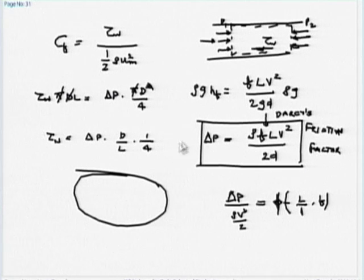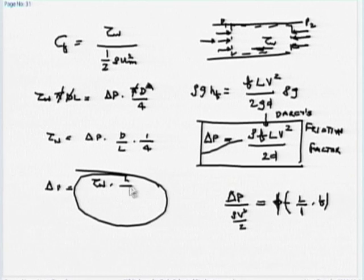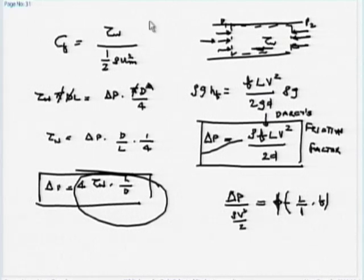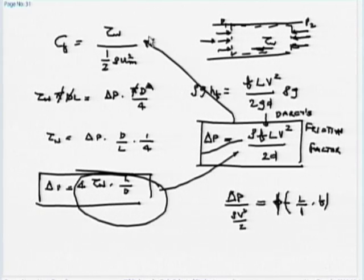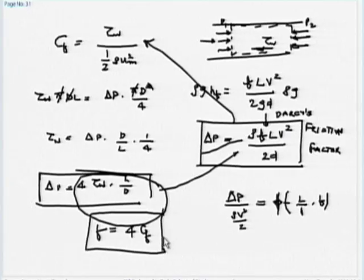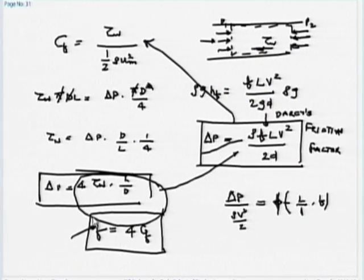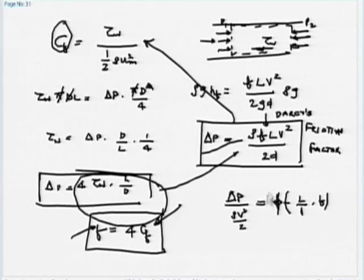Substituting τ_wall into the equations and comparing: ΔP = τ_wall × 4L/D. If I put this into the Darcy equation and compare with C_f, I get F = 4C_f. So Darcy's friction factor F and skin friction coefficient C_f both represent shear stress — it is just that the way they are defined is different. C_f is defined as τ_wall/(½ρu_m²).